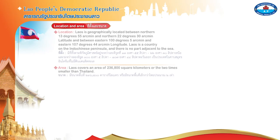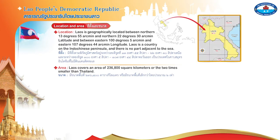Laos People's Democratic Republic. Location: Laos is geographically located between northern 13 degrees 55 arcmin and northern 22 degrees 30 arcmin latitude, and between eastern 100 degrees 5 arcmin and eastern 107 degrees 44 arcmin longitude. Laos is a country on the Indo-Chinese peninsula and there is no part adjacent to the sea.